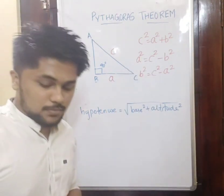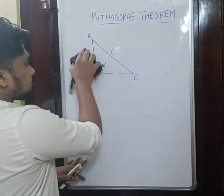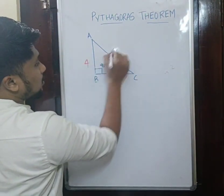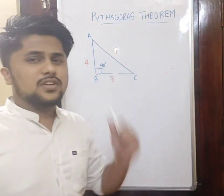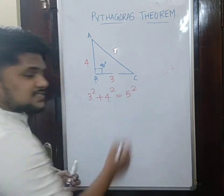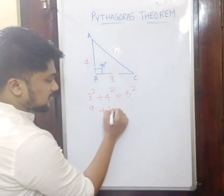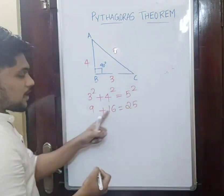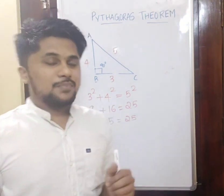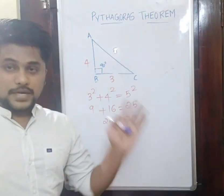Let's discuss with an example. I am taking side lengths of 3, 4, and 5. The Pythagoras theorem says that 3 squared plus 4 squared should equal 5 squared. What is 3 squared? That is 9. And 4 squared is 16. What is 5 squared? That is 25. So 9 plus 16 equals 25 — which is indeed 25. So we have verified: 3 squared plus 4 squared equals 5 squared. That is the Pythagoras theorem.